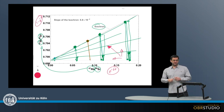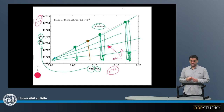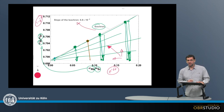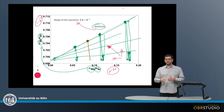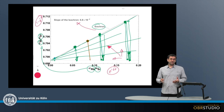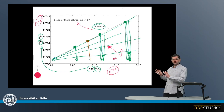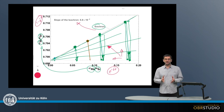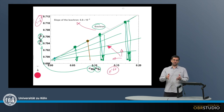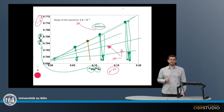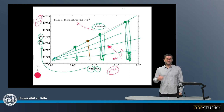This is how the isochron plot is generally structured. The slope of the isochron can give us the age of the rock. The key point is that this is a parametric plot that produces the isochron, and from its slope we can deduce an age.